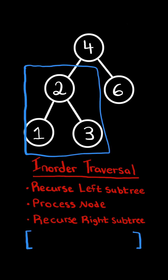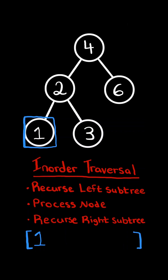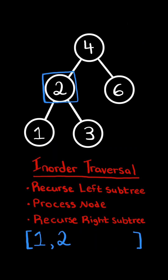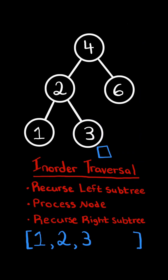So in this example, we first recurse on the left subtree, further recurse on the left subtree, and again recurse on the left subtree. But there is no left subtree, so we process the parent node and recurse on its right subtree. But its right subtree is null, so we go up the stack and process the node, and recurse on its right subtree. We recurse on its left subtree, but notice it's null, so we move up and process the parent node, and then recurse on its right subtree.